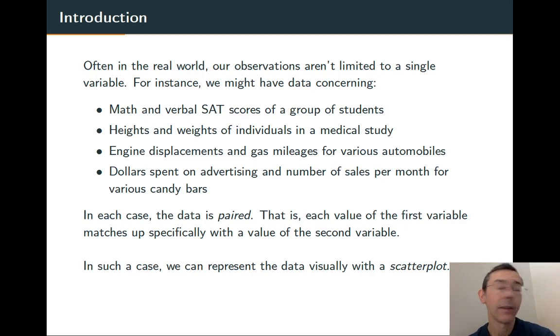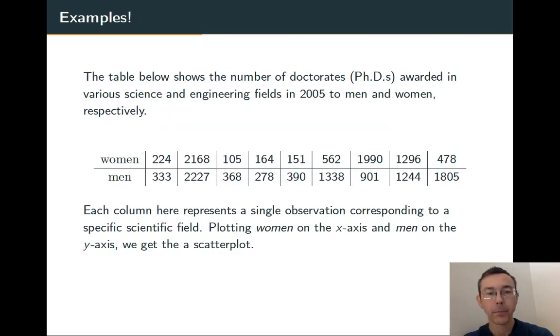And if you have that situation, you can draw a scatter plot. So here's an example. In this table, every column represents a scientific or engineering field. The number on top is the number of PhDs awarded in that field to women in 2005, and the number on the bottom represents the number of PhDs awarded to men in 2005. So let's plot these.